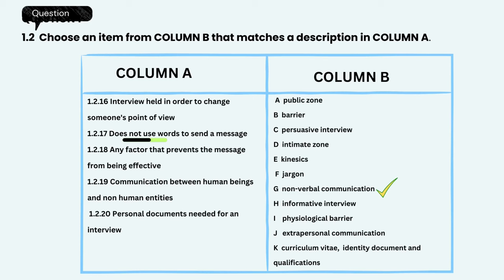Any factor that prevents the message from being effective — the correct answer is B, Barrier. Communication between human beings and non-human entities — the correct answer is J, Extrapersonal communication. Personal documents needed for an interview — the correct answer is K: Curriculum vitae, identity document, and qualifications.